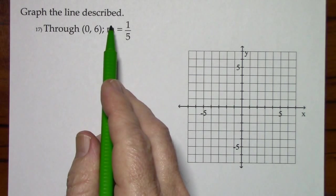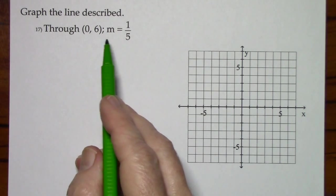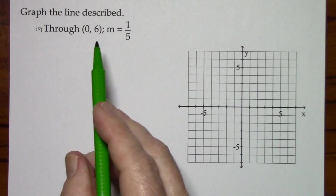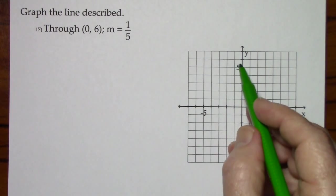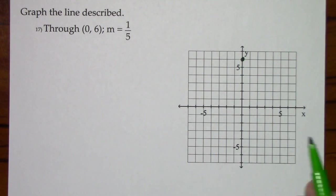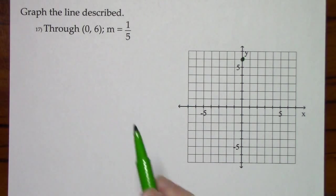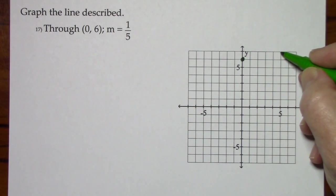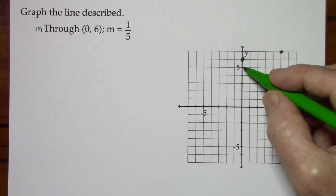Here we just need to graph the line. It goes through 0, 6. It has a slope of 1 fifth. So 0, 6, no back and forth, just up 6. Put a dot. Our slope is 1, rise 1, run 5. So that's up 1 over 5. Normally I would keep going, but I'll be well off of the graph. I'd like to put another point on here.